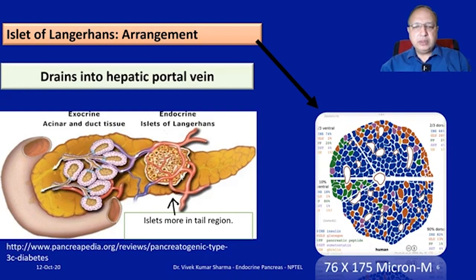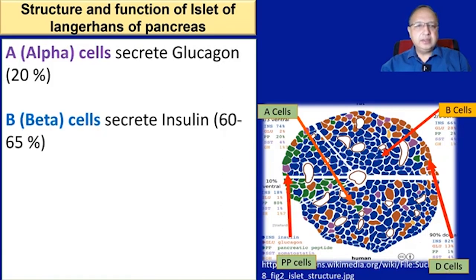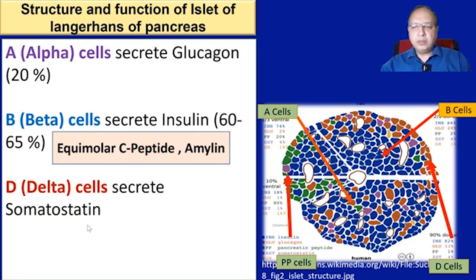The islets are more densely located in the tail region. Within the islet, the B cells that secrete insulin are near the center. A cells are slightly outer, and pancreatic polypeptide-secreting cells are sparsely distributed everywhere. D cells that secrete somatostatin are located towards the periphery of the islets. F cells secrete pancreatic polypeptide.